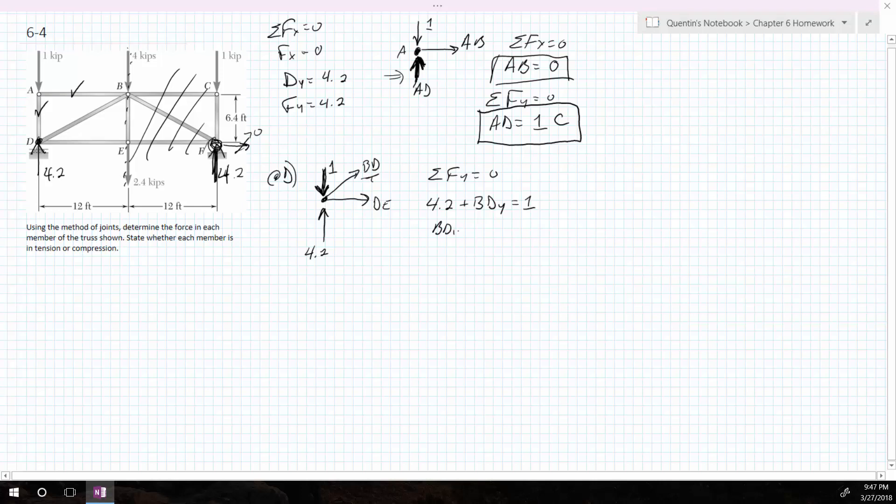So therefore, BD in the Y is equal to minus 3.2. So the negative is just telling me that I drew it the wrong way, which is fine. But I don't want the BD in the Y. I want BD. So then I'm going to look at this triangle.